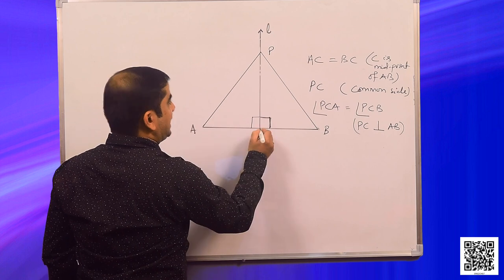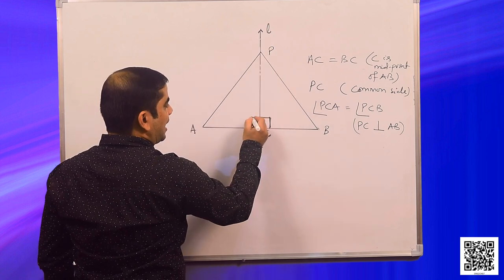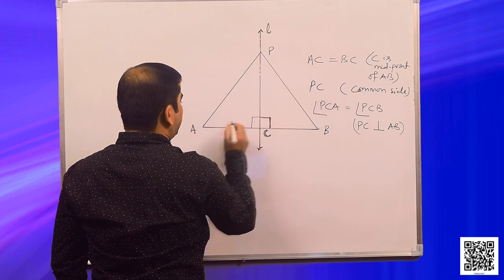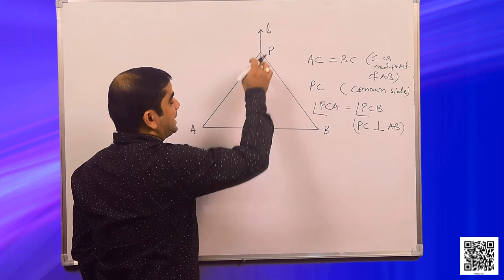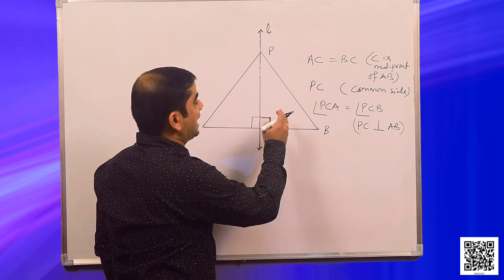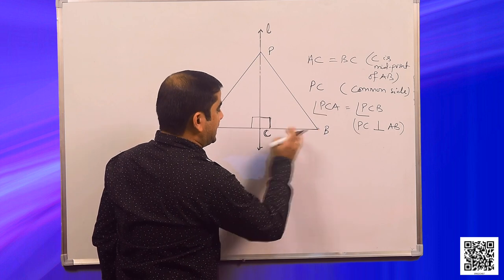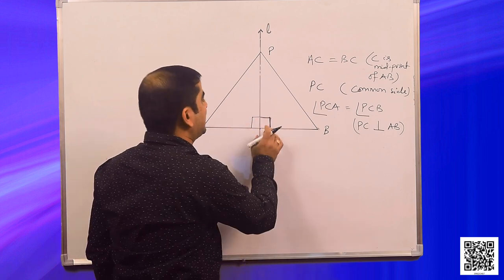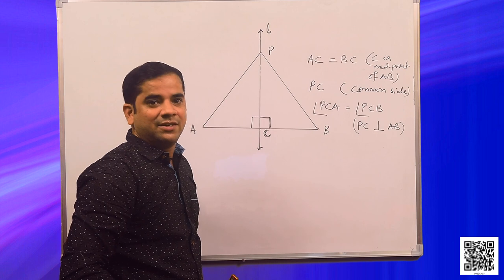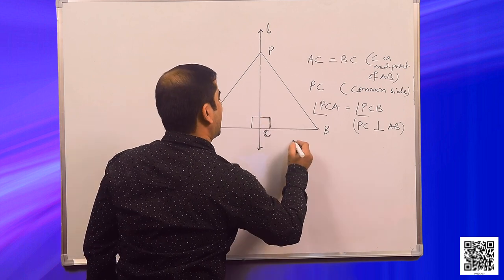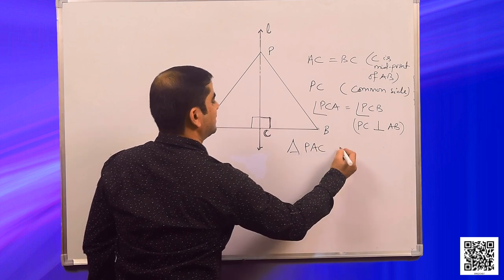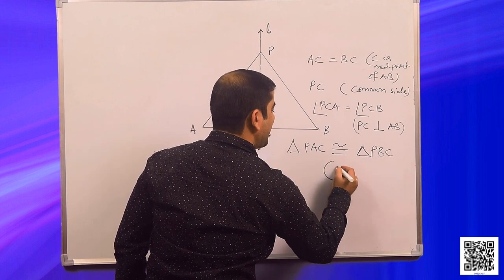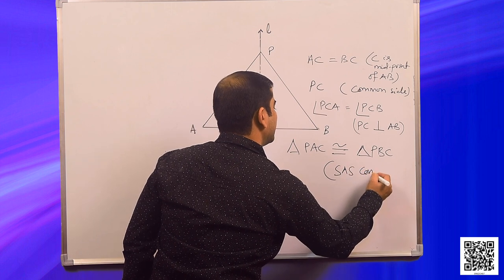We have side AC, common side PC, and angle PCA for triangle APC. Angle PCA is the included angle for PC and AC. Similarly in triangle BPC, we have side BC, side PC, and angle PCB which is the included angle. That means the angle is made up of these two sides. So triangle PAC is congruent to triangle PBC by SAS congruency.